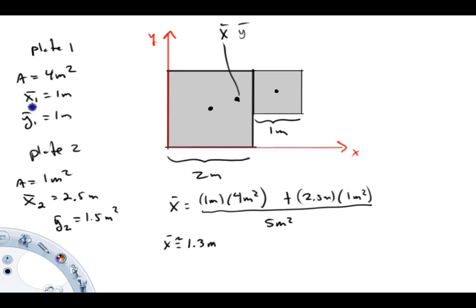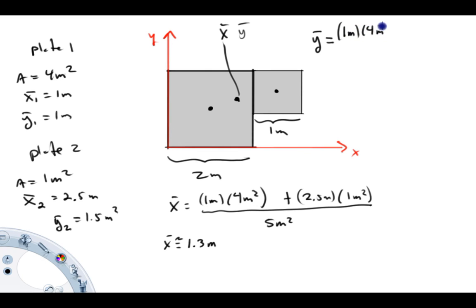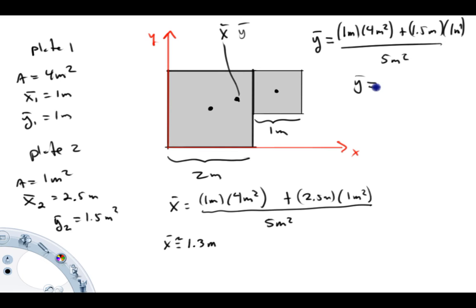Now for y-bar of the system, we average the y-coordinates weighted by area: y-bar = (1 m × 4 m² + 1.5 m × 1 m²) / 5 m² = 5.5 / 5 ≈ 1.1 meters. So the center of area of this system is approximately 1.3 meters to the right and 1.1 meters up from the coordinate system origin.